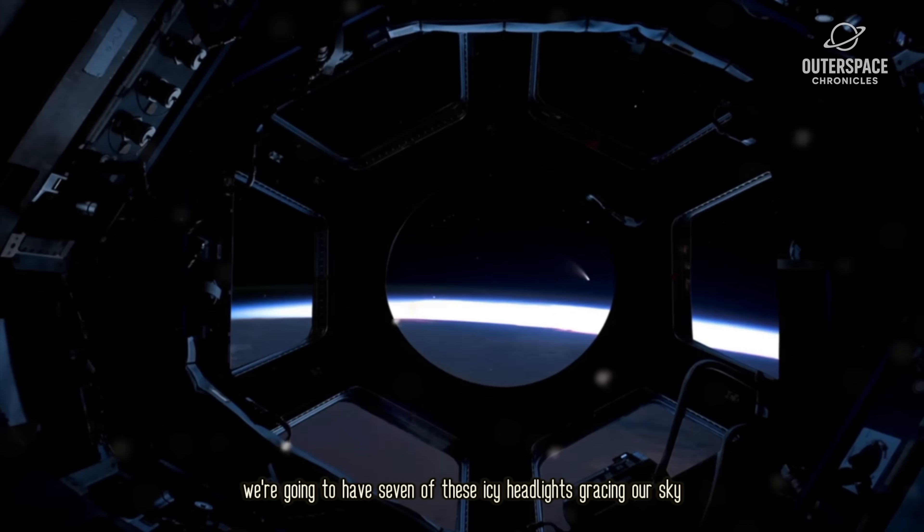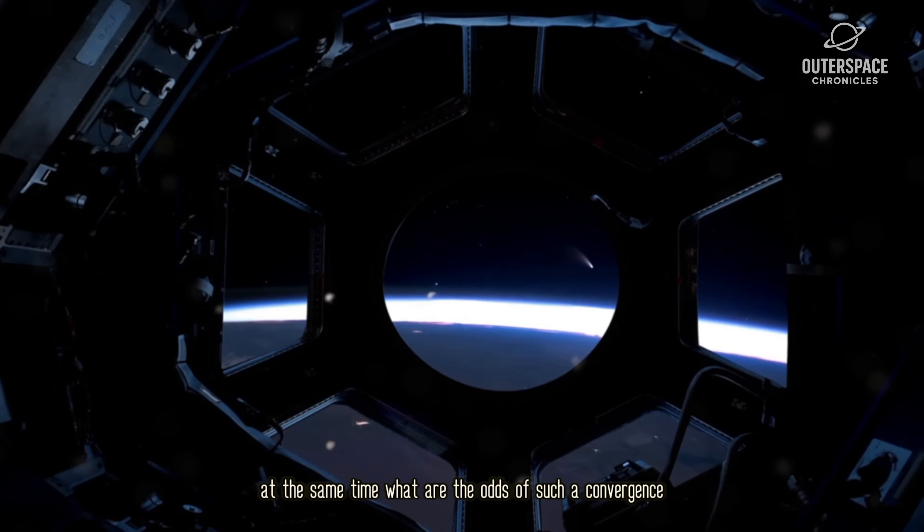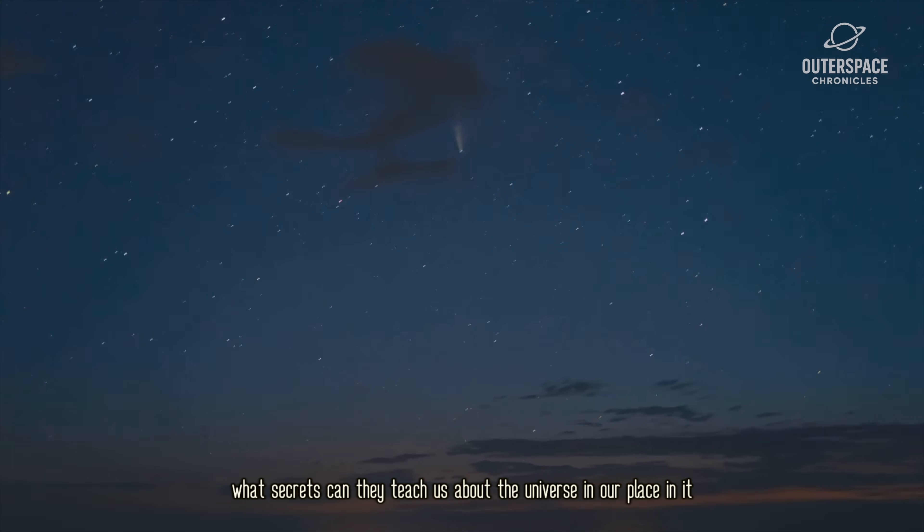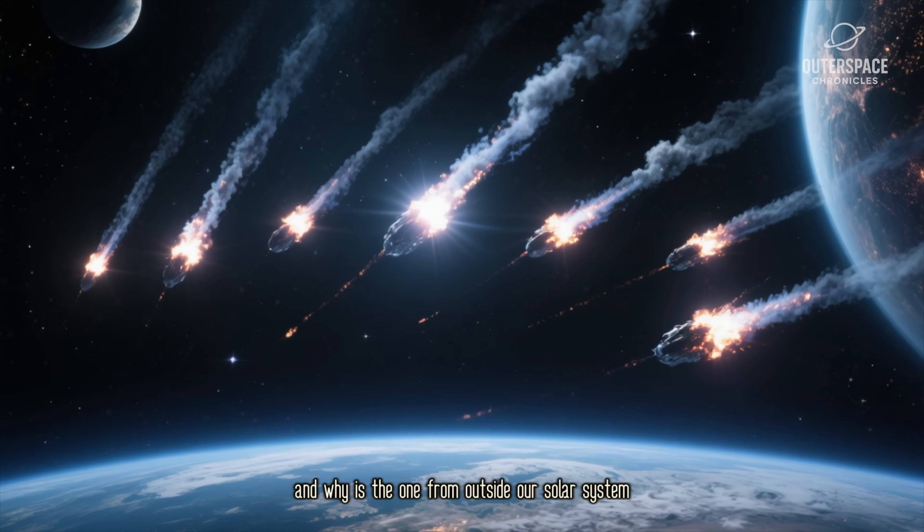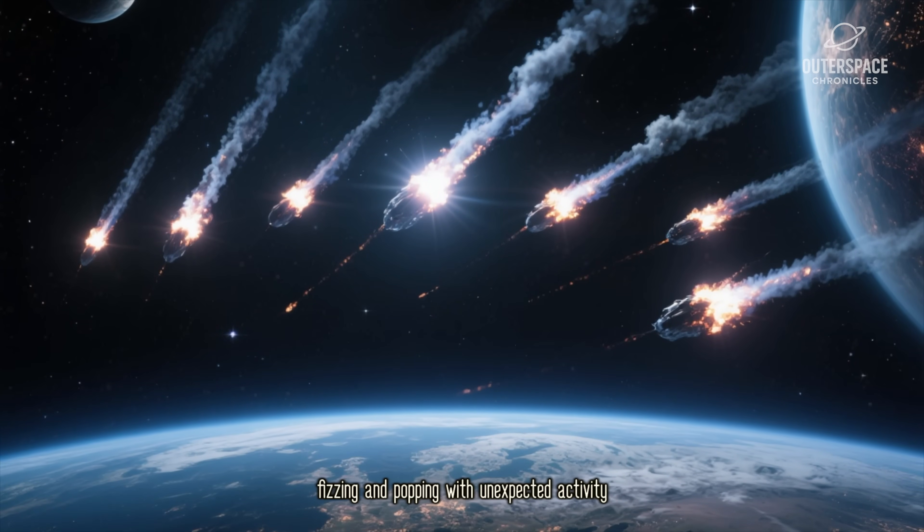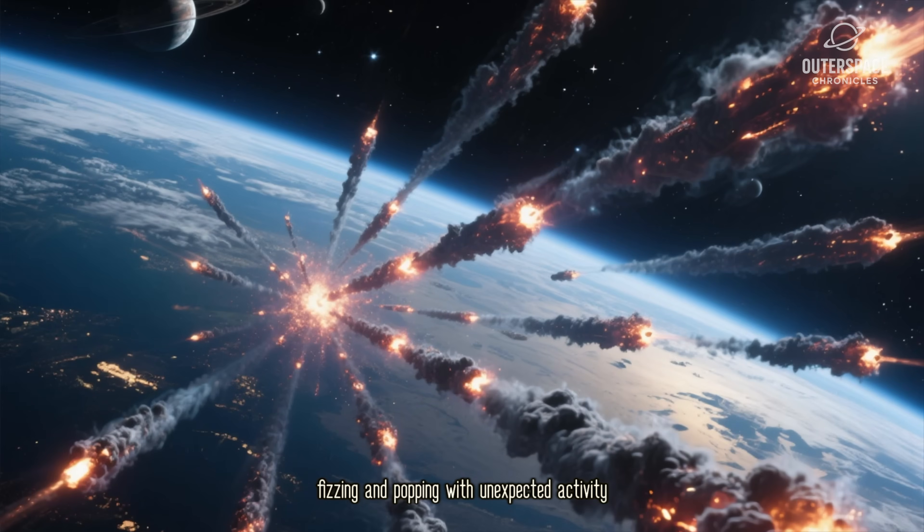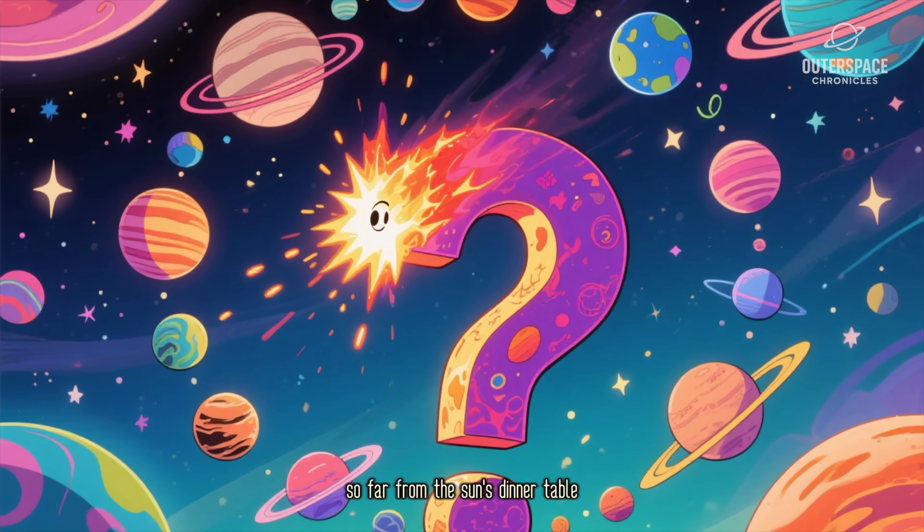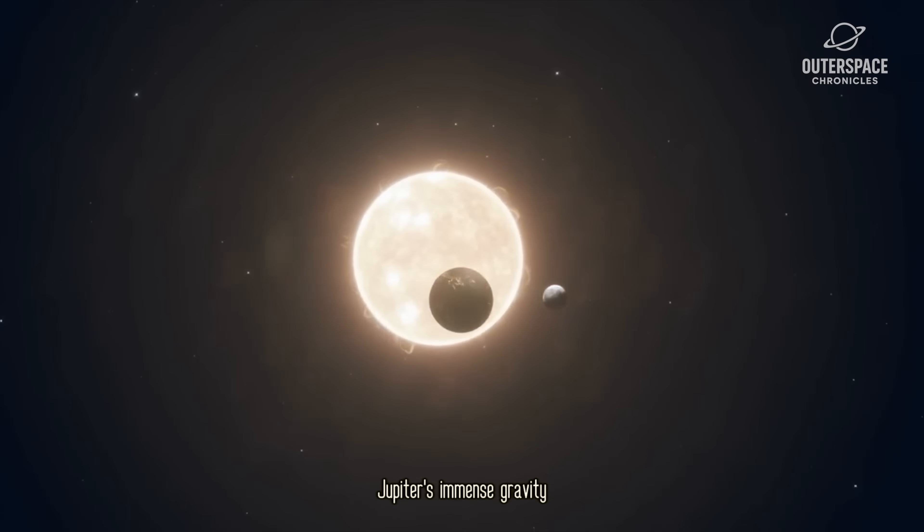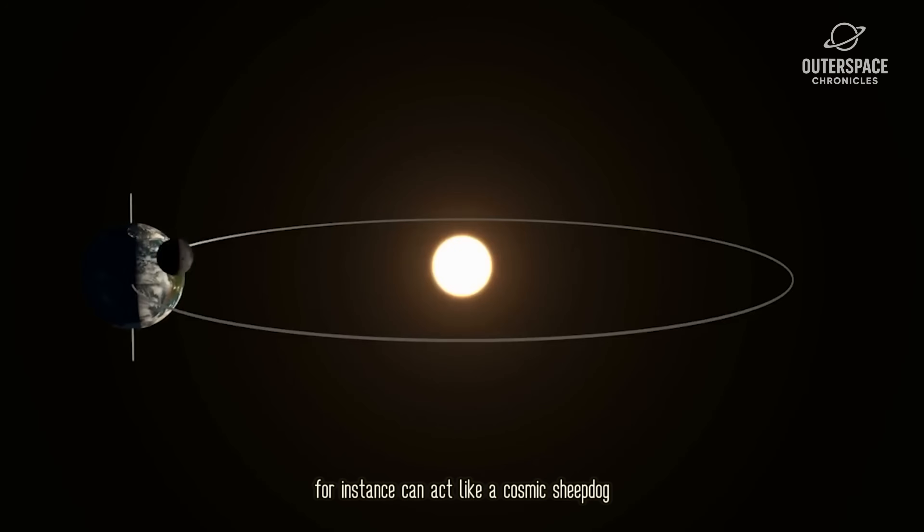In just a matter of weeks, we're going to have seven of these icy headlights gracing our sky at the same time. What are the odds of such a convergence? What secrets can they teach us about the universe and our place in it? And why is the one from outside our solar system already acting like it's late for dinner, fizzing and popping with unexpected activity so far from the Sun's dinner table?